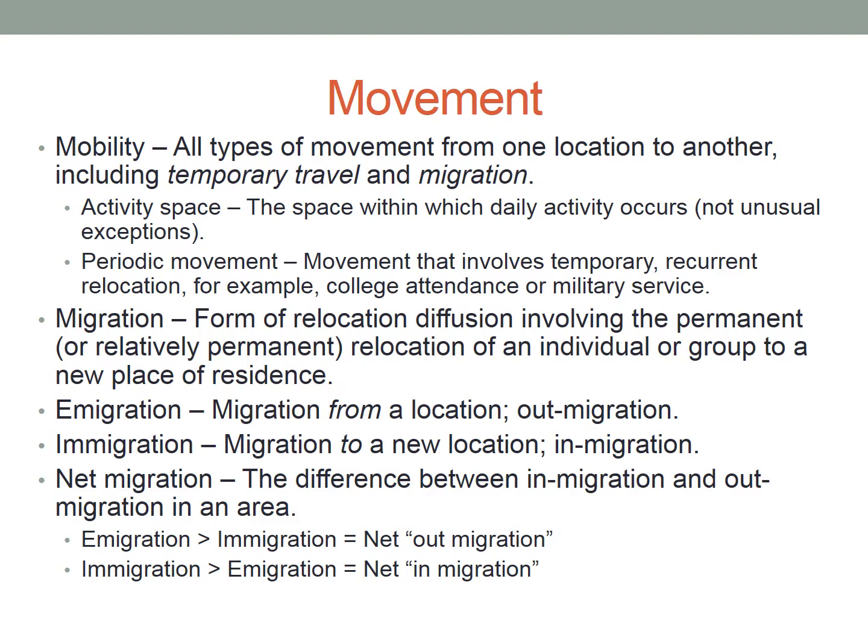We're starting out with the different types of movement. Human movement is really about how different ideas and innovations diffuse around the world. We start out with mobility, which is just all types of movement from one location to another, including temporary travel and migration. What do you think differentiates migration from temporary travel? Make a prediction — let's see if that shows up in the definition of migration here in just a moment.